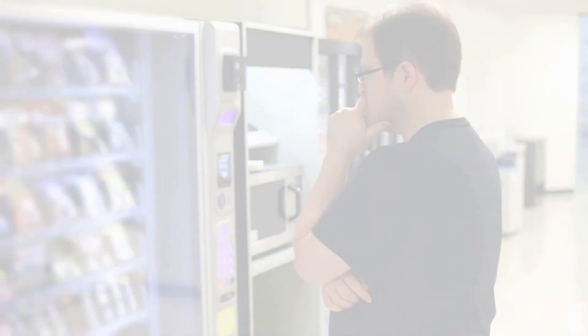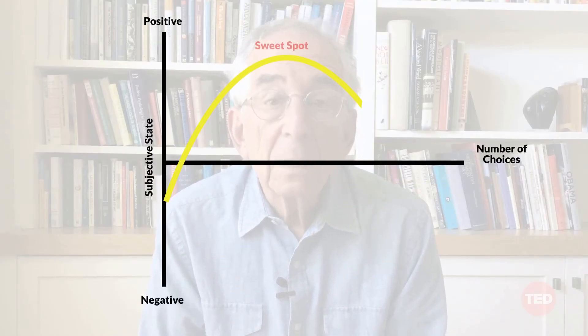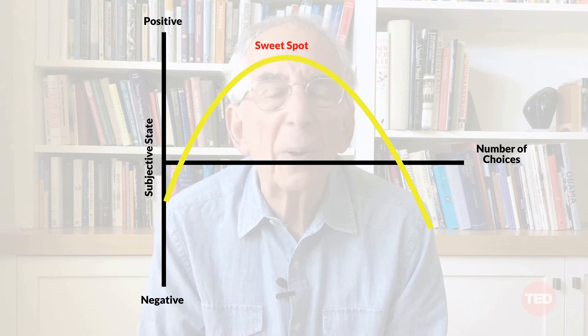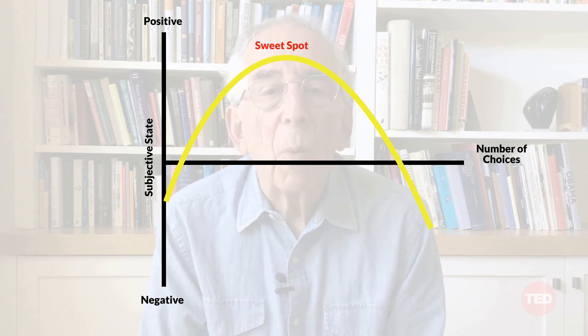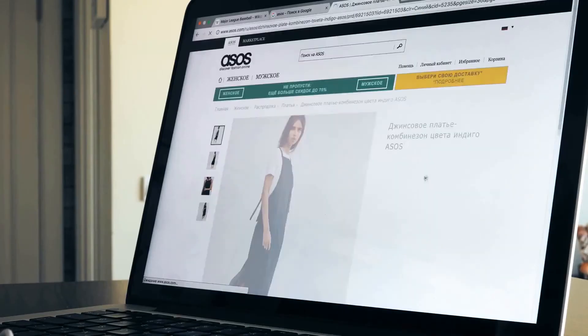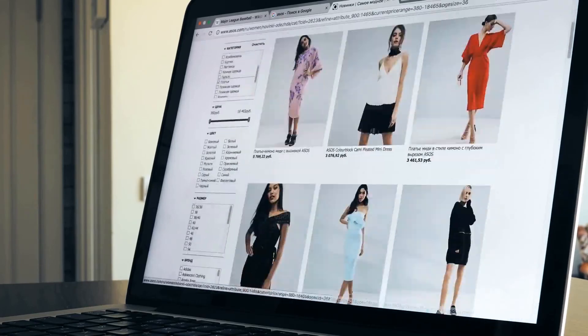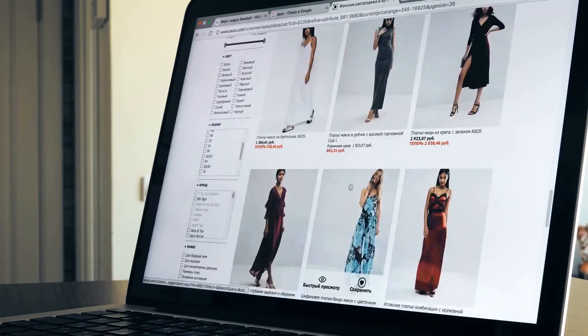Now if we look at the other side of the spectrum, as a business you also need to be careful not to overwhelm your prospects and potential customers. That's why Mr. Schwartz discovered a so-called sweet spot. This is the point where the number of choices is most effective on our subjective well-being. This is the point where we offer not too little but at the same time not too much.